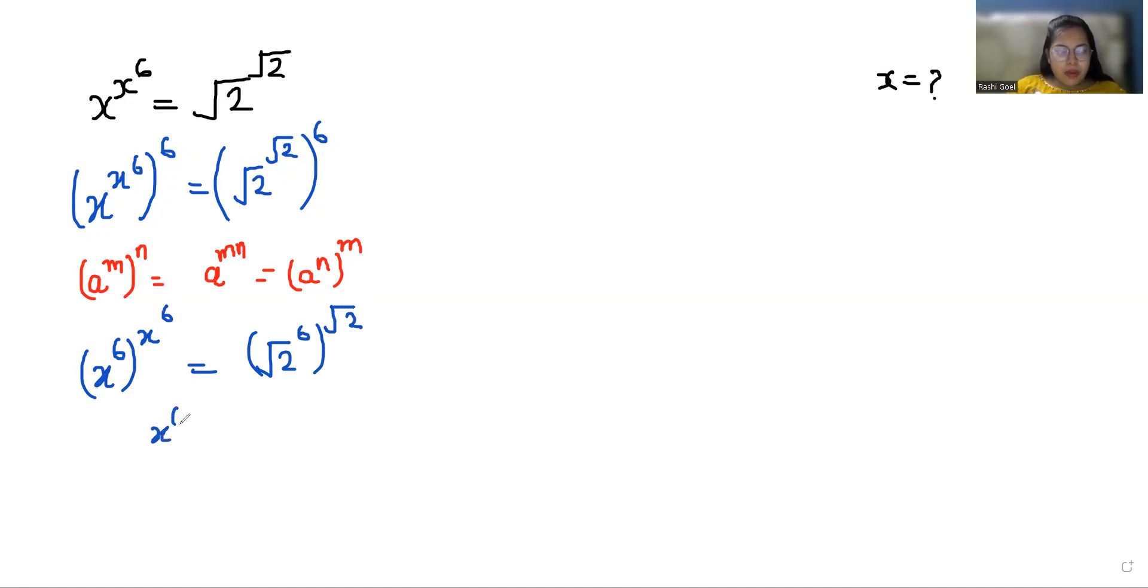Now I'm considering x^6 as a. So we can write it as a^a equals (√2)^(6√2), with the help of this rule again.